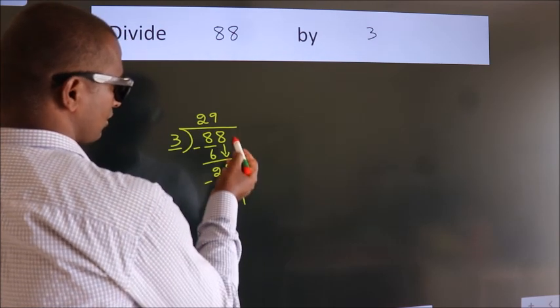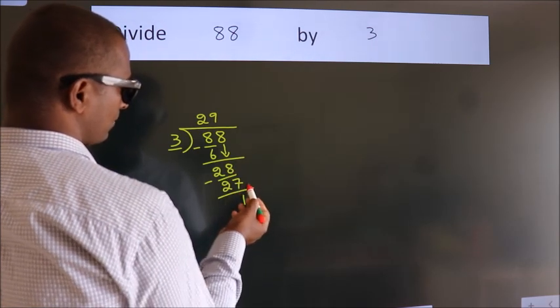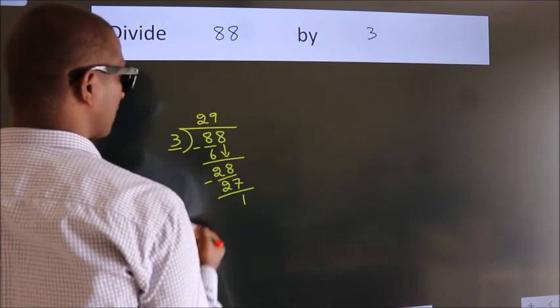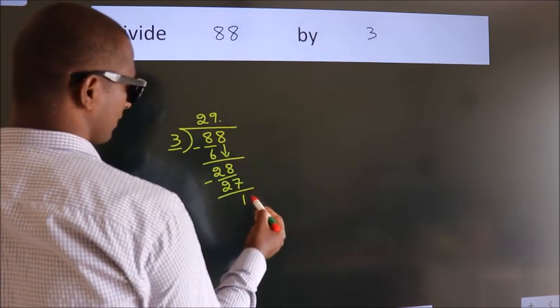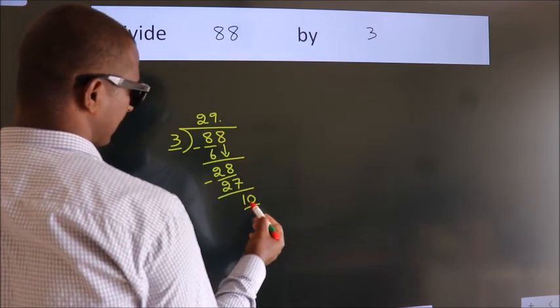After this, no more numbers to bring it down. So, what we do is we put a dot and take 0. So, 10.